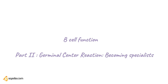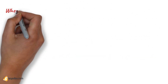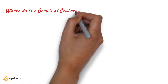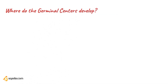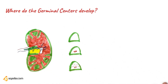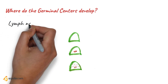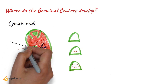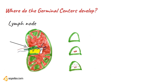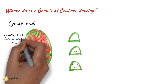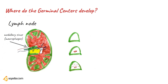First, we're going to see where germinal centers develop. Germinal centers do not pre-exist — they develop inside the lymph nodes, triggered by the contact of an antigen with a lymphocyte. Let's make a quick recap of the lymph node structure. Lymph nodes are secondary lymphoid organs that look like beans, connected to each other with lymph vessels shown in green. The region around the lymph vessels is called the medullary sinus, and it contains macrophages.